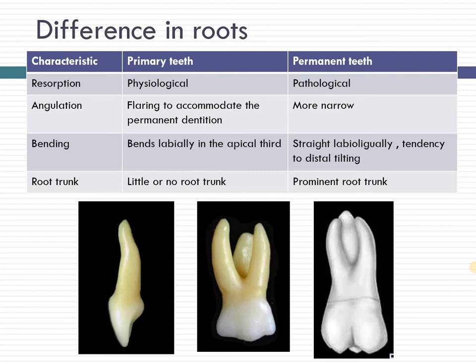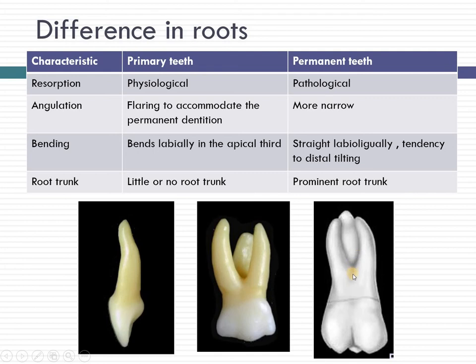The roots are different in deciduous teeth because they need to accommodate the permanent successor coming in that location. For anterior teeth, the apical portion of the root is more labially placed so the permanent tooth can sit right under it. For posterior teeth, the roots are flaring, allowing the premolars to sit in between. Root resorption in deciduous teeth is a physiological phenomenon, whereas in permanent teeth it is pathological. The root trunk — the area from the cervical line to the site of bifurcation — is much more prominent in permanent teeth but much smaller and narrower in deciduous teeth due to the flaring roots.